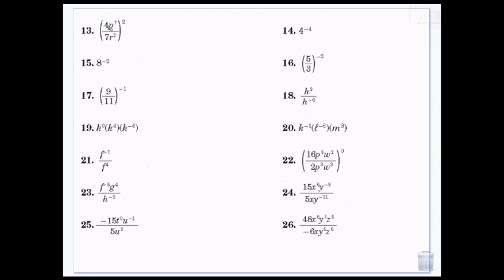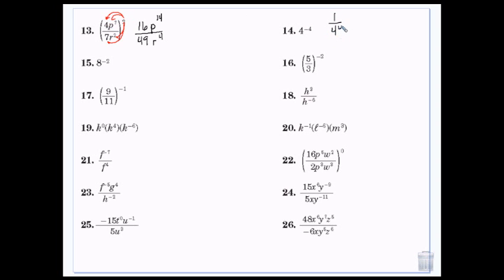When there's division and raising to a power and all kinds of stuff going on, I take this 2 and I put it everywhere. So this is 4 squared — p to the 14th, because I'm multiplying that power 2 times — or 7 squared is 49, r to the 4th. Then I look: does anything reduce or divide? 16 and 49 don't have anything in common. p and r aren't the same, so we're done. If I have a negative exponent, I throw it in the basement, making it positive. 4 to the 4th is 4 times 4, which is 16, times 4 is 64, times 4 is 256.